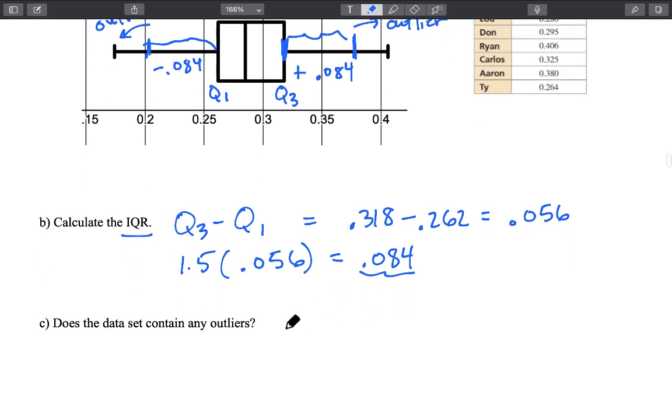We've got Q3 which is 0.318. We're going to add to that 0.084 and that is going to give me 0.402. Okay so anything outside of that 0.402 which is going to be about right here is going to be considered an outlier.